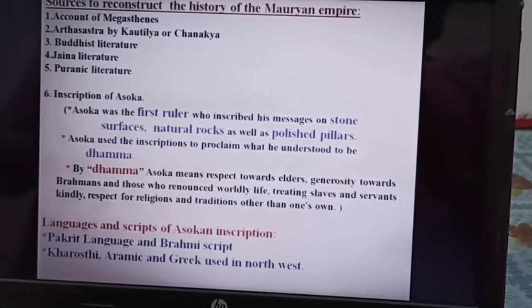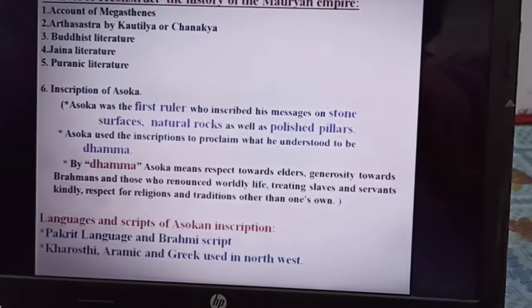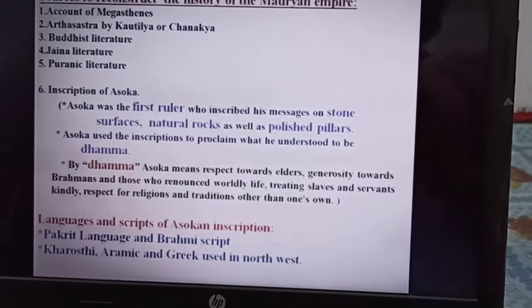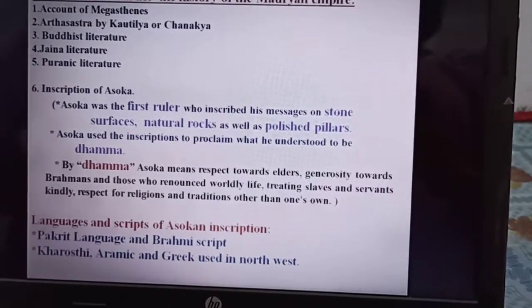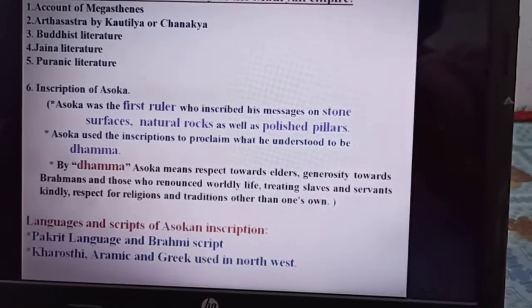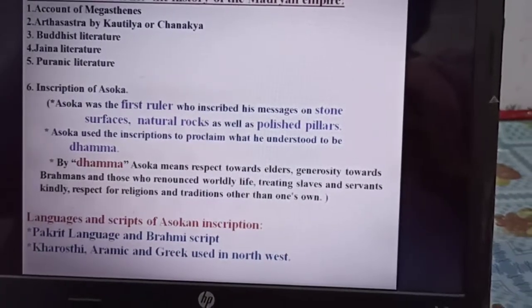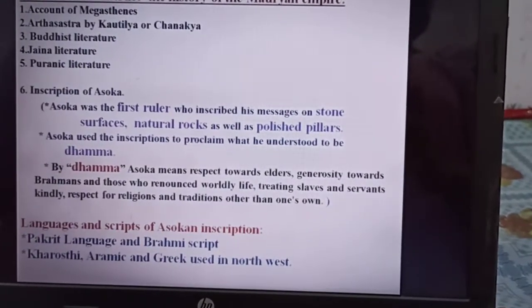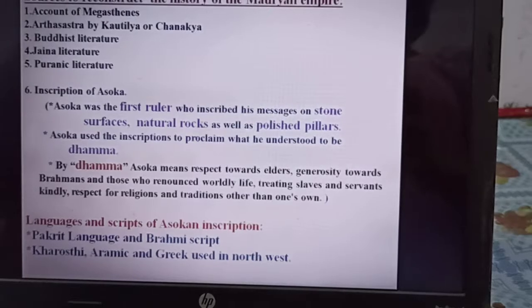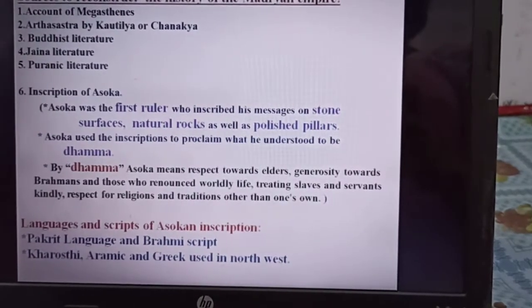The inscription means that Ashoka was the first ruler who inscribed his messages on stone surfaces — natural rocks as well as polished pillars.